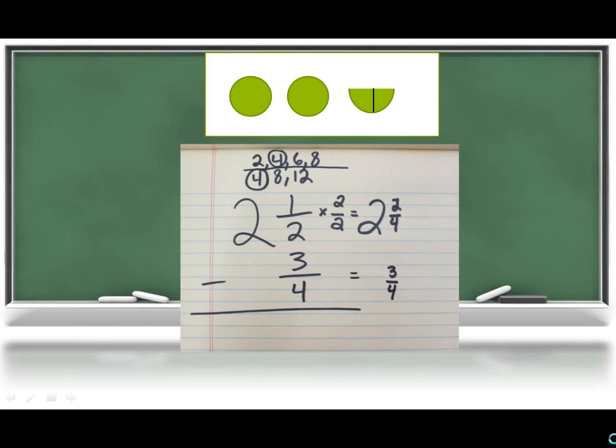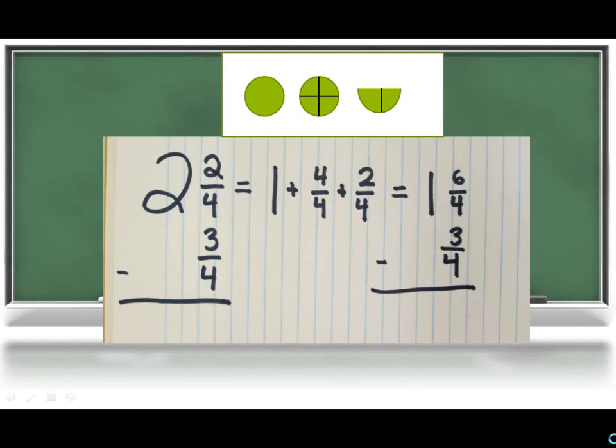By renaming the half as our least common denominator of fourths, the student should next see that they can take away fourths, but there aren't enough to remove three-fourths. So as they did in the model, they can rename one of the wholes as four-fourths, which would combine with the two-fourths and give you a total of six-fourths.